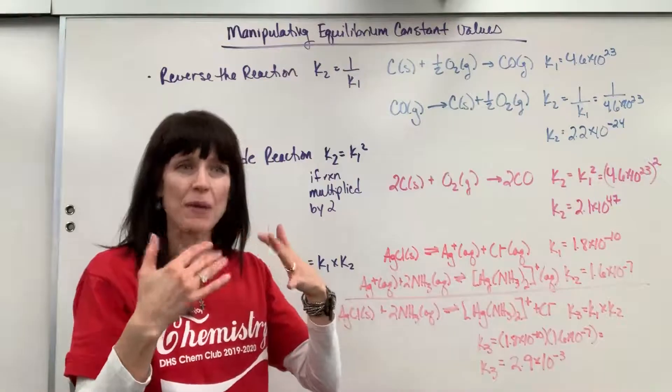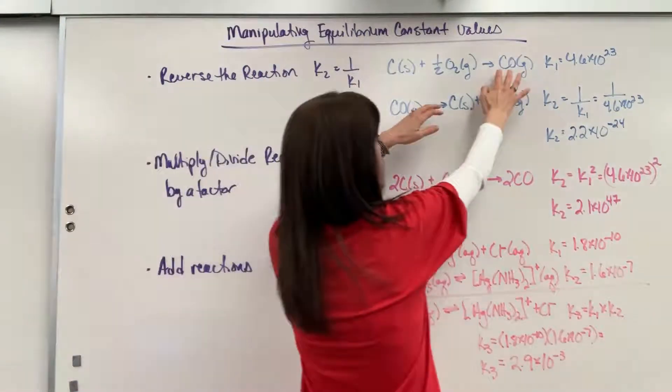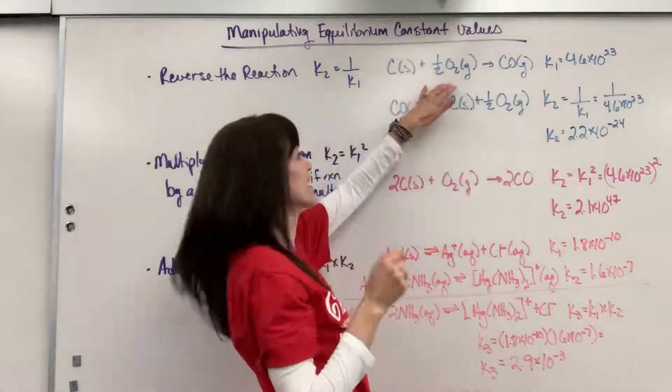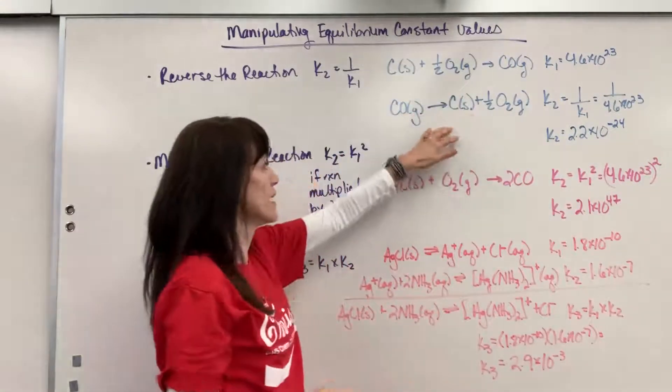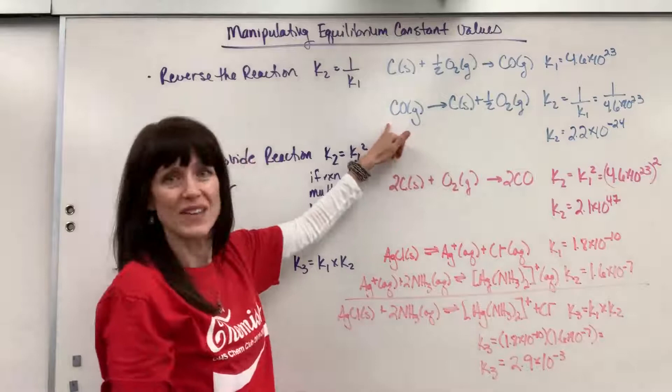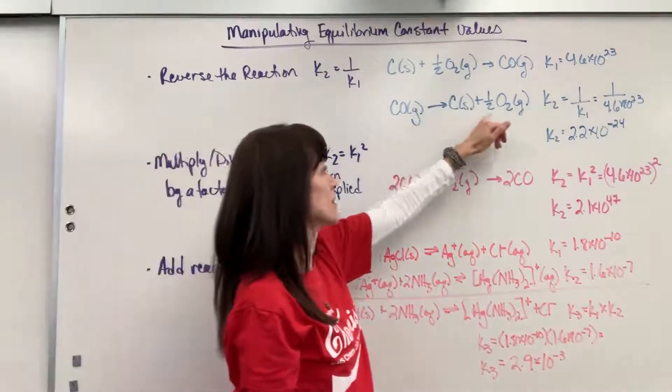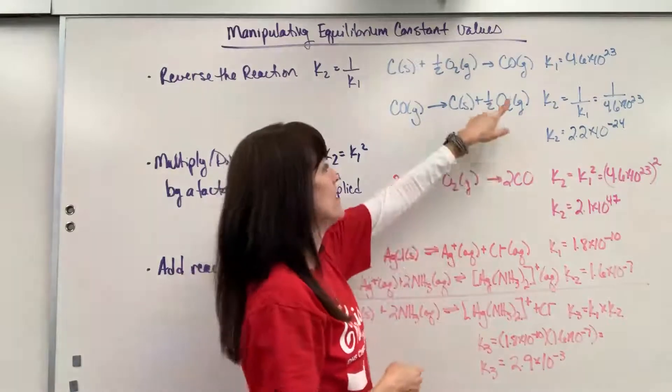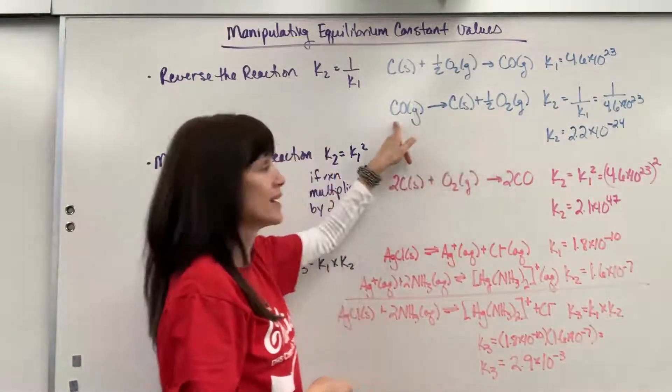So remember how we write the equilibrium expression? Product CO over reactants - not the carbon because it's solid - over the oxygen. Well, now, check it out. The CO is the reactant, the carbon and oxygen are the product. So now I'd write it just opposite, reciprocated. The oxygen raised to the one half divided by CO.